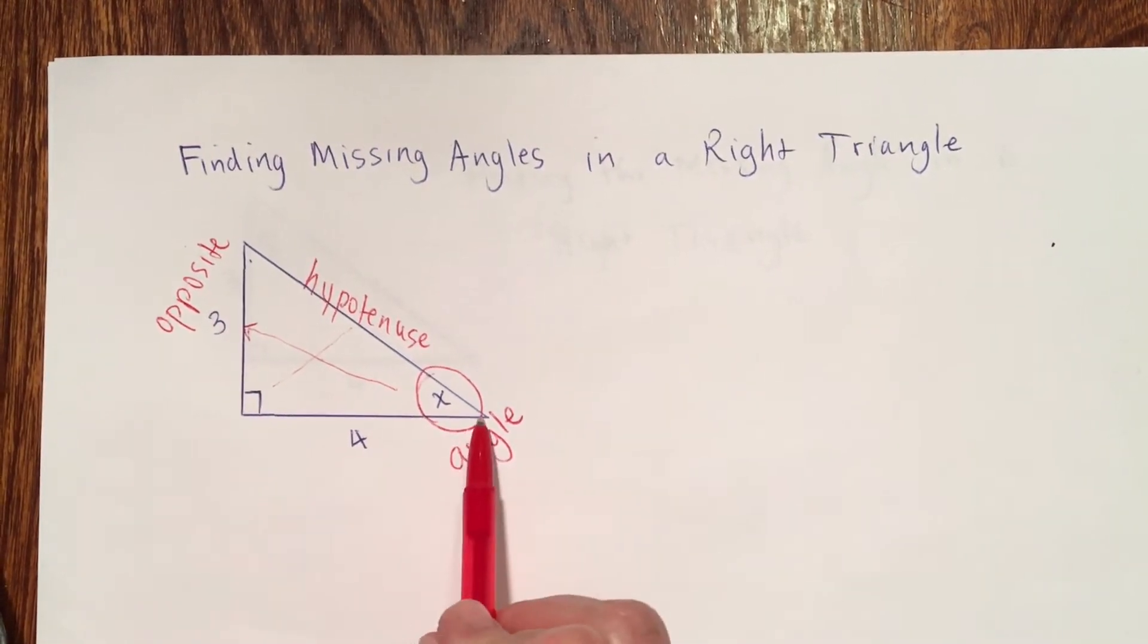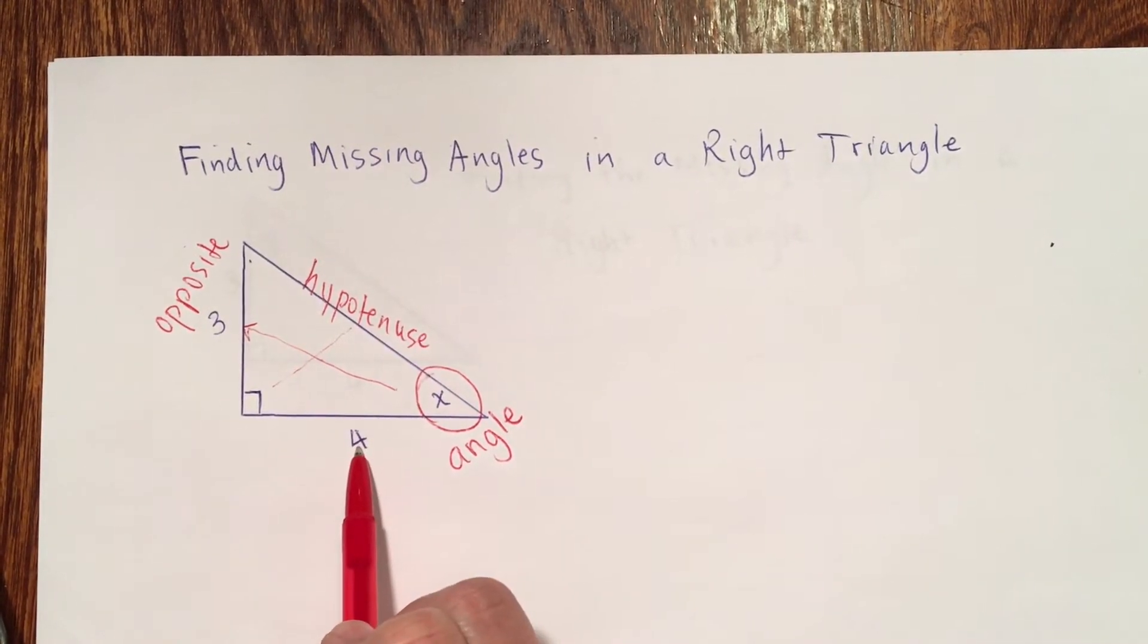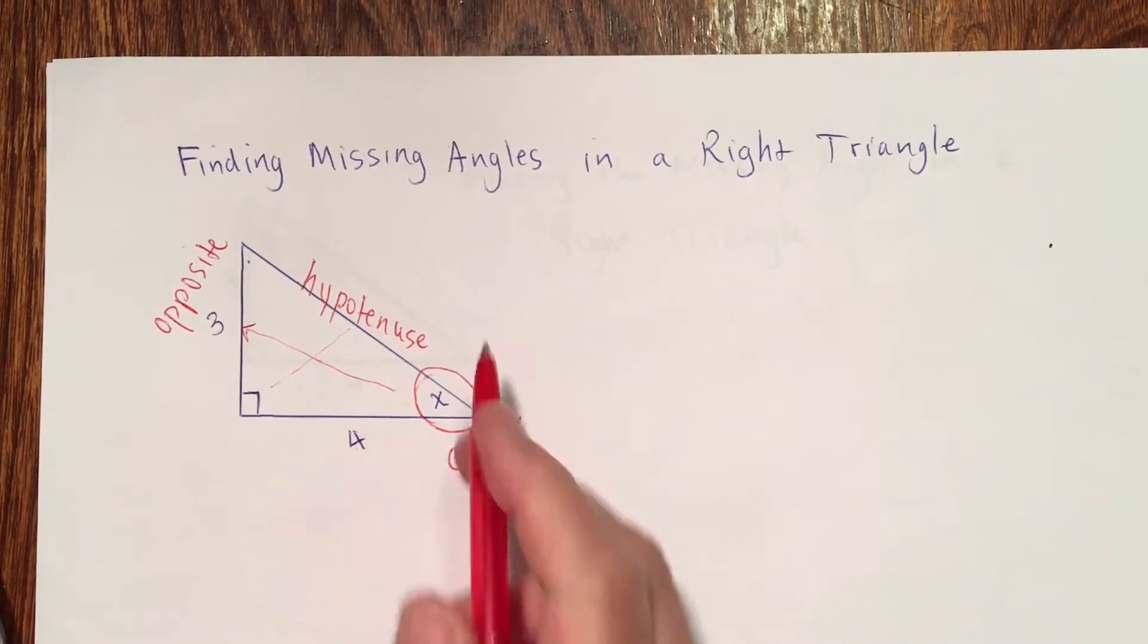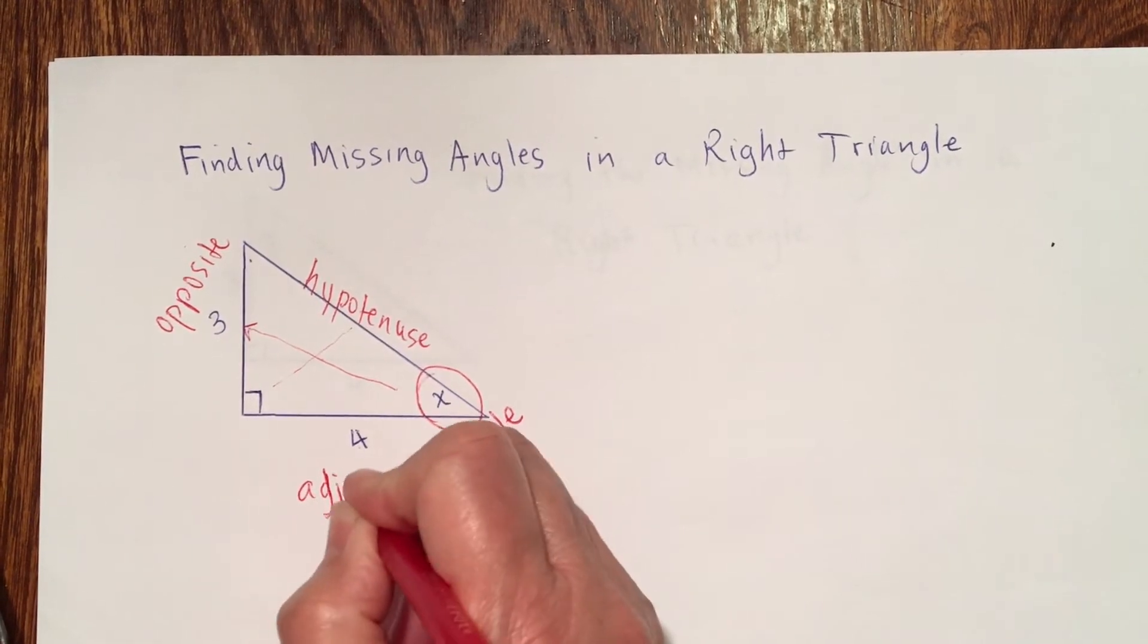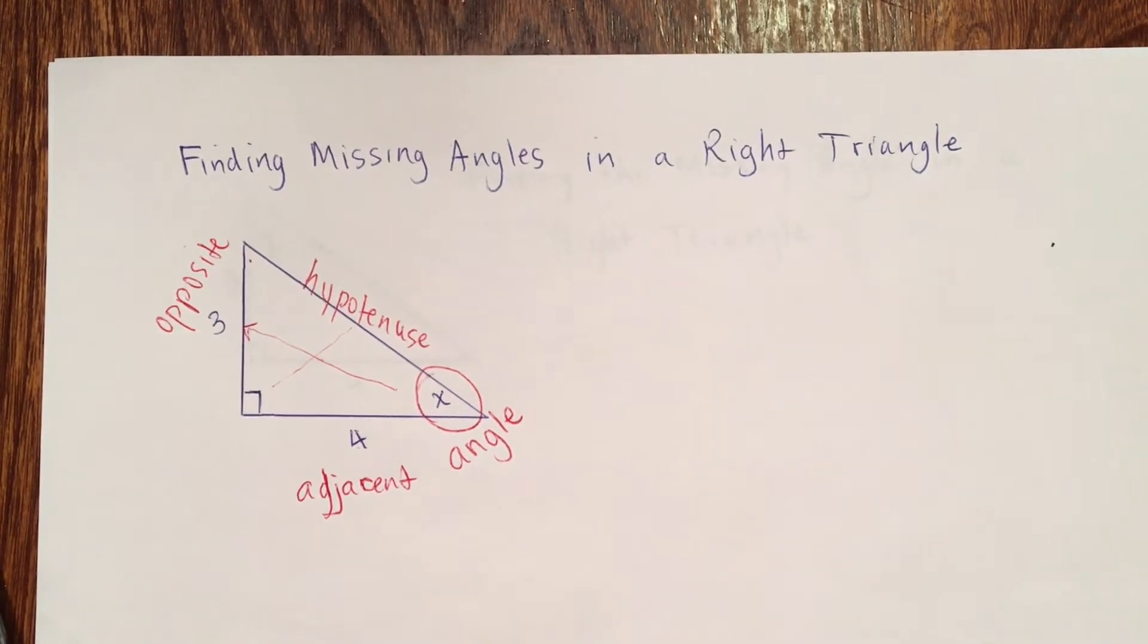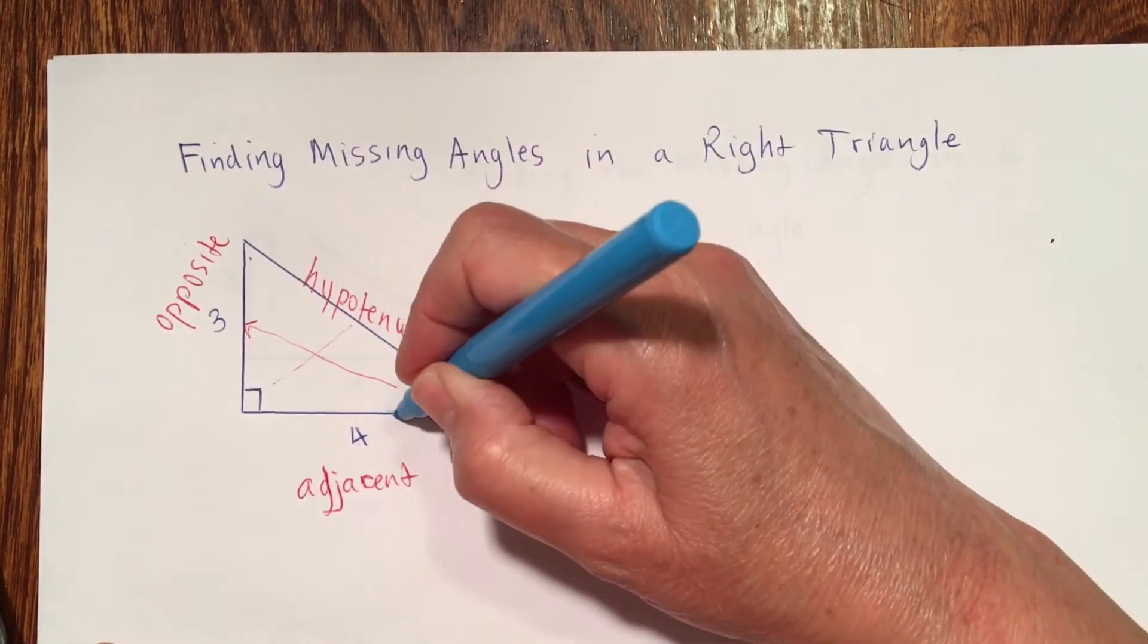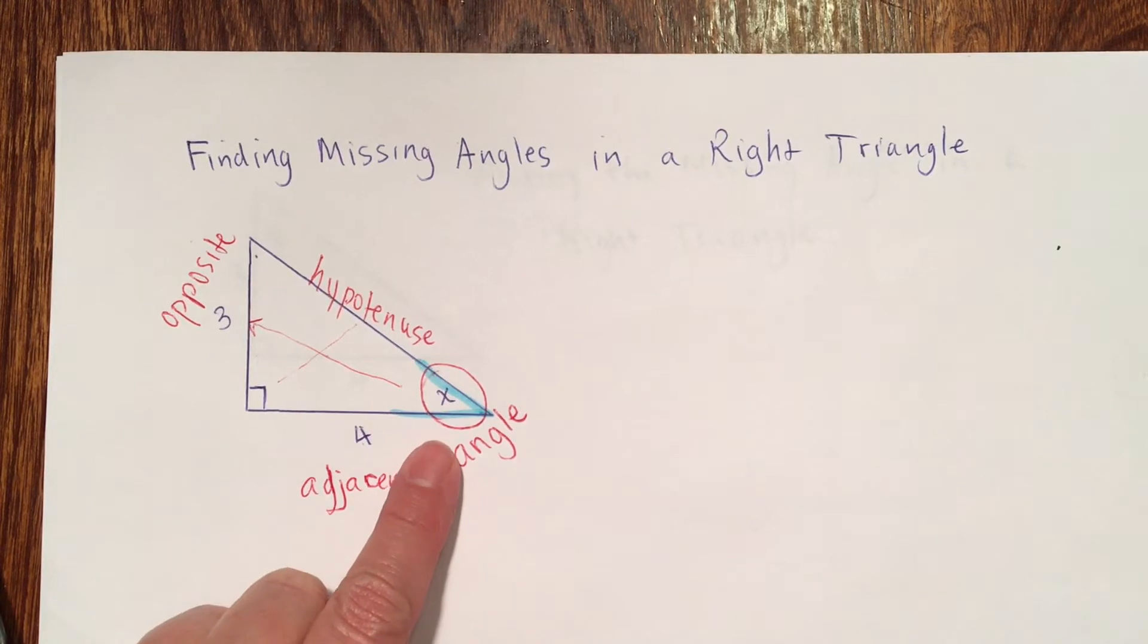The side that's 4, well that's not the hypotenuse because we've already identified the hypotenuse. The side that's 4, that side is adjacent to angle x. And you can kind of look at it and see there are two sides that make up angle x. But once you know the hypotenuse, the other of those two sides is going to be the adjacent side.